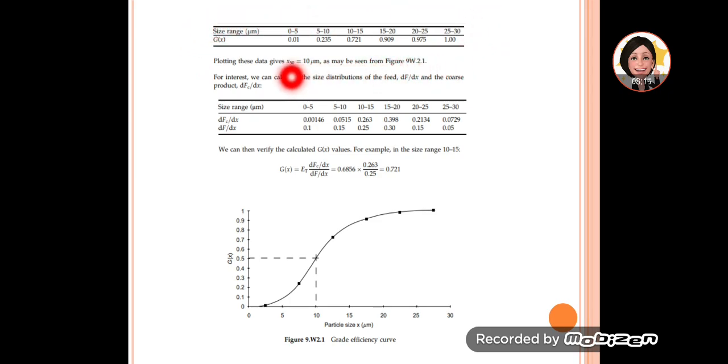Then we plot this table, grade efficiency versus particle size. You can take the mean of the range or the high range. Here they took the mean. Between 5 and 10, this is the point. They took the mean of each range and plotted this value.